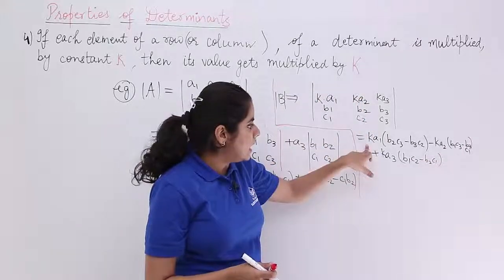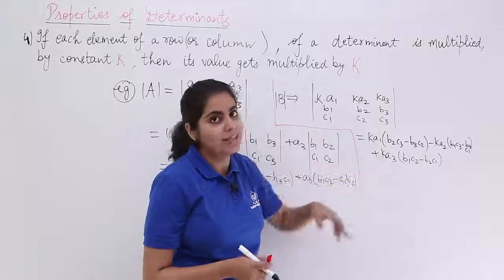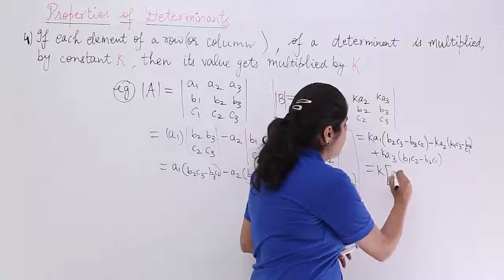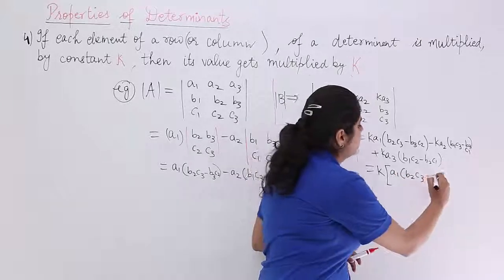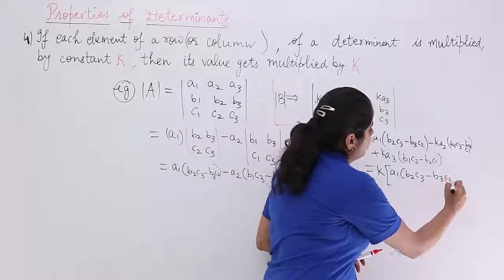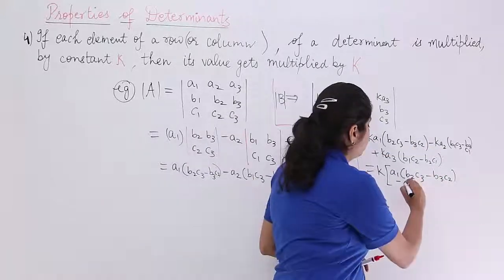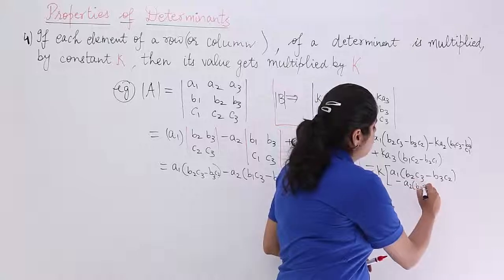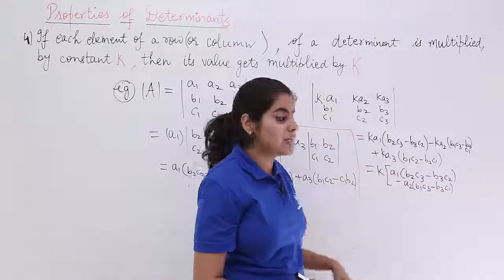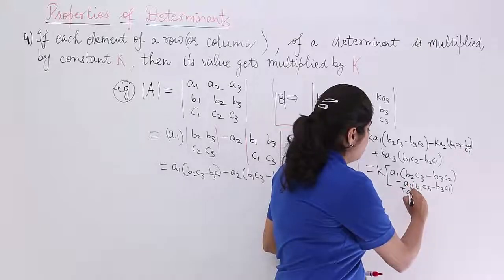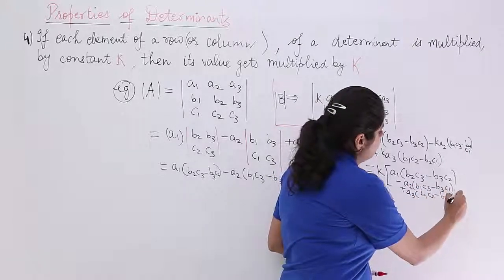Now, since Ka is coming here, Ka is coming here, Ka is coming here, can you take Ka common? Yes, you can. So, just Ka. If you take common, it is A1, B2, C3 minus B3, C2. Then, inside minus will come, A2 will come, B1, C3 minus B3, C1. Then, you have plus A3. So, it is plus A3, B1, C2 minus B2, C1.